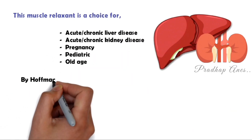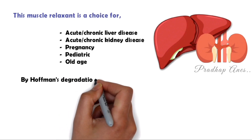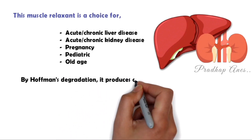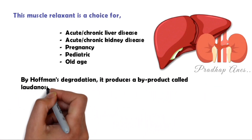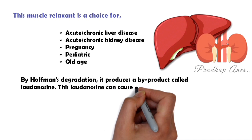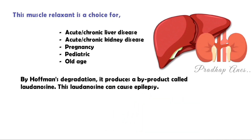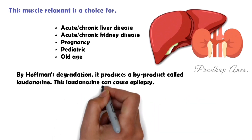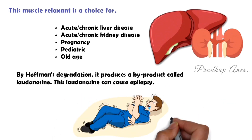By Hoffman's degradation, Atracurium produces a by-product called laudanosine. Accumulation of laudanosine can cause epilepsy.